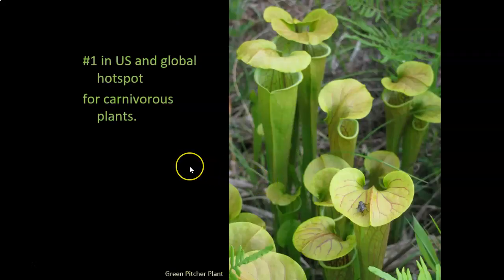We're number one state and global hotspot for carnivorous plants — plants that actually capture and digest animals to get their nutrients. They get their energy from the sun through photosynthesis, but they are designed as traps that catch everything from ants to flies to sometimes lizards. These carnivorous plants get their nutrients — think of it like vitamins — from trapping other organisms, and we are the number one state and global hotspot for carnivorous plants.